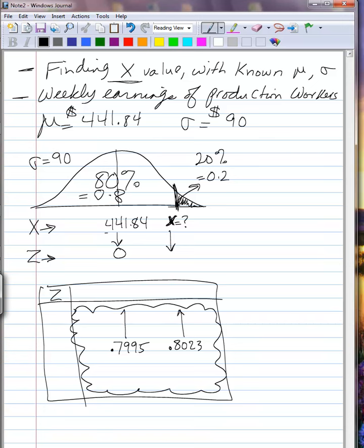Those are the ones that come as close to our 0.8 probability. Looking at the z values associated with those two entries, we see 0.84 and 0.85 are the z values that come close to our area that we are interested in.